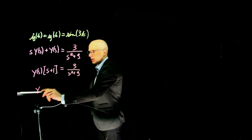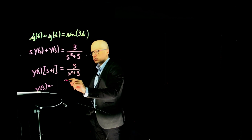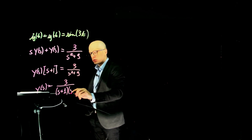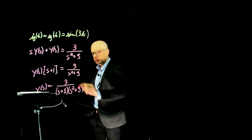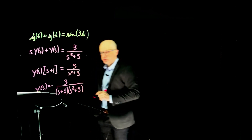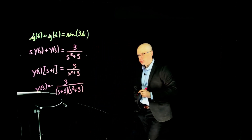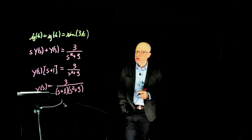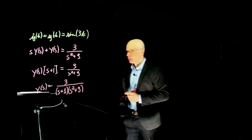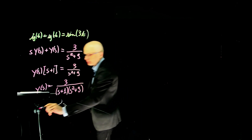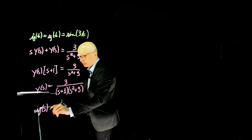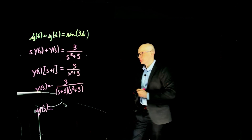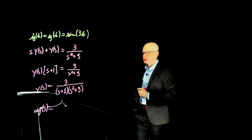So Y(s) equals 3 over (s+1)(s²+9). Now we are stuck - this is not going to be in the table of Laplace transforms. What do we do? Partial fractions. What are the partial fractions for this?